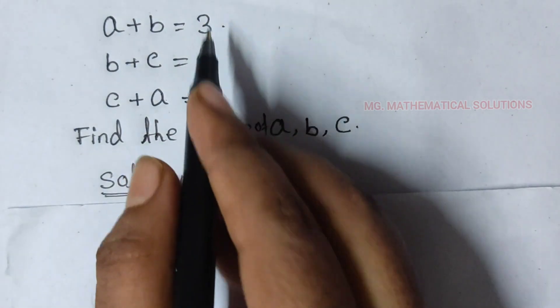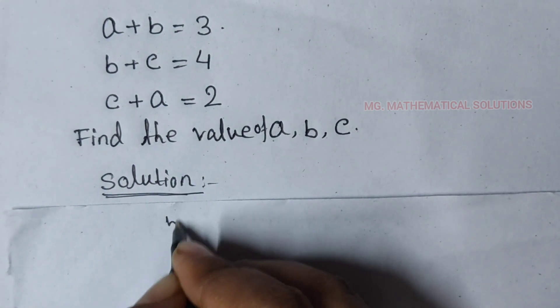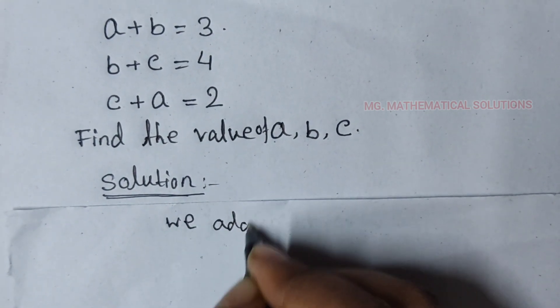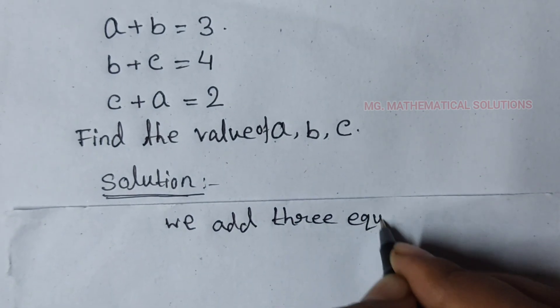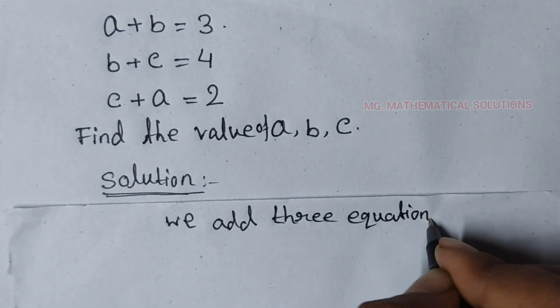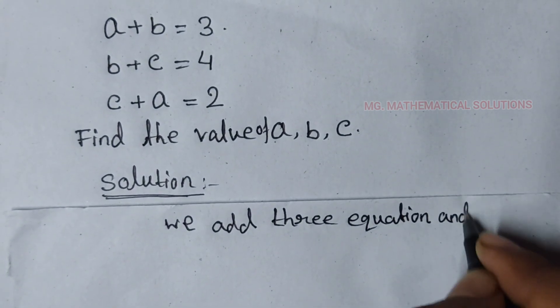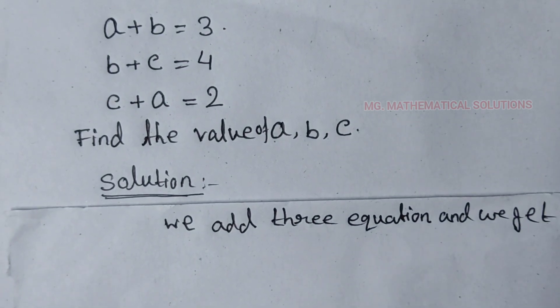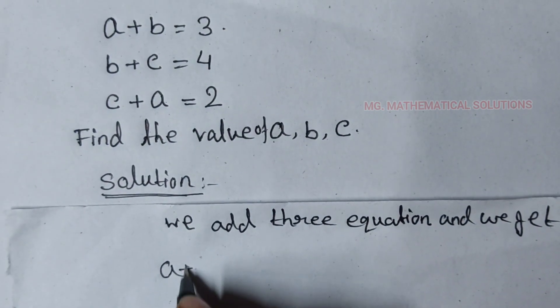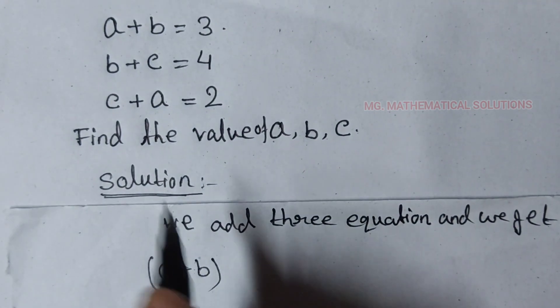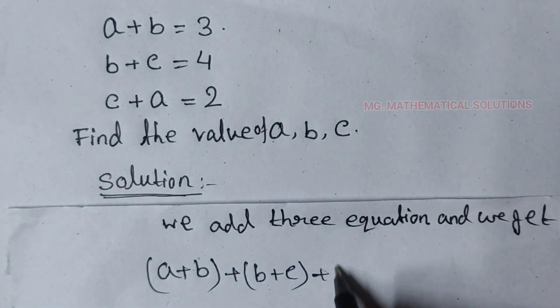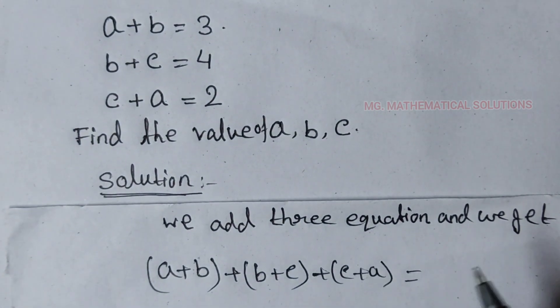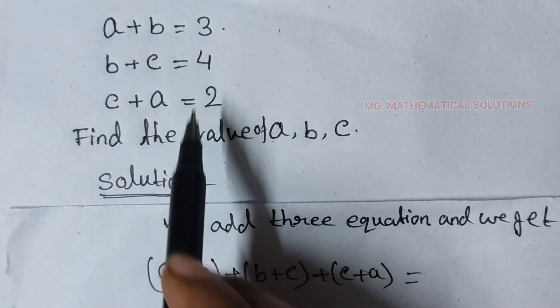First we add three equations. Here we write, we add three equations, and we get a plus b plus b plus c plus c plus a equal to 3 plus 4 plus 2.